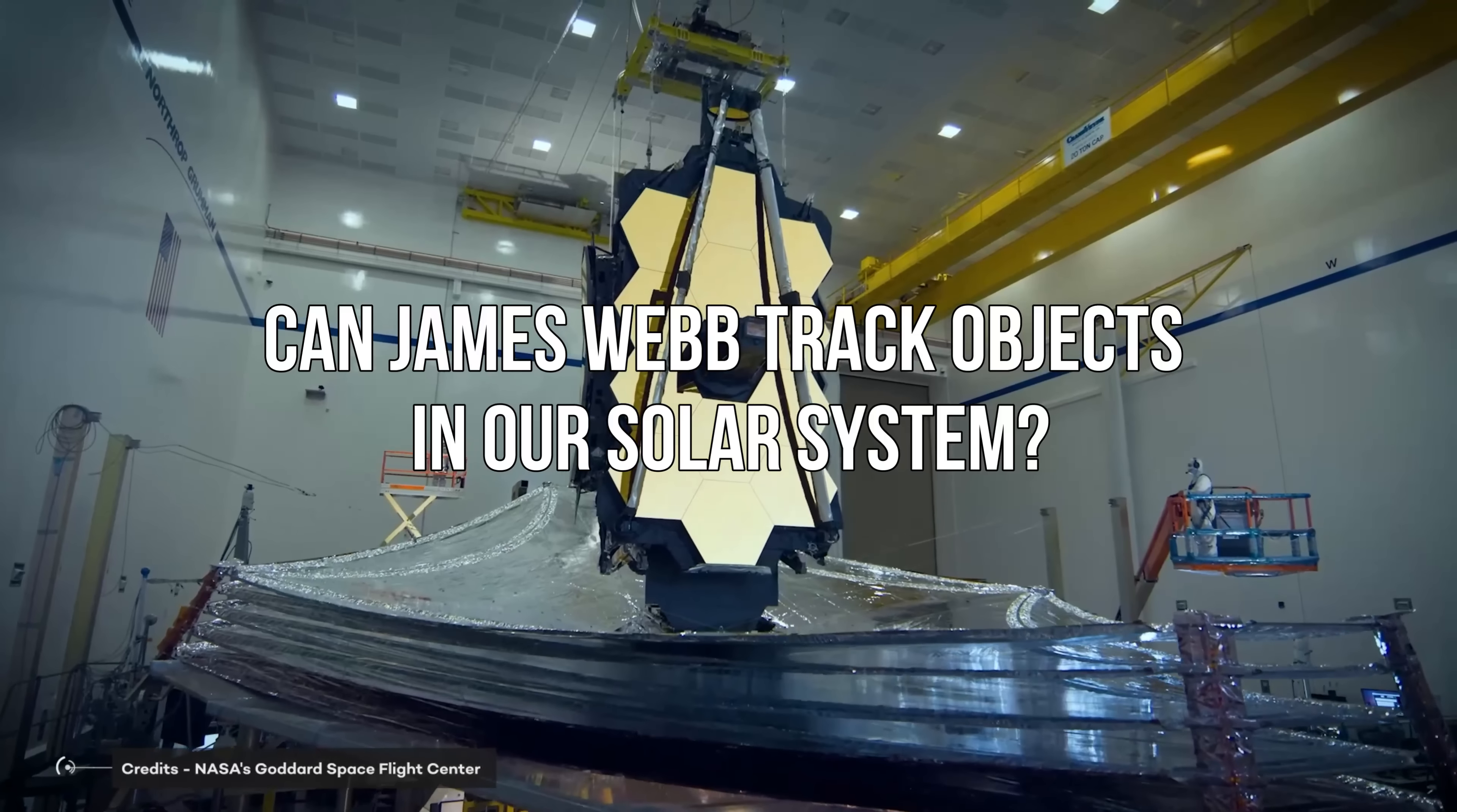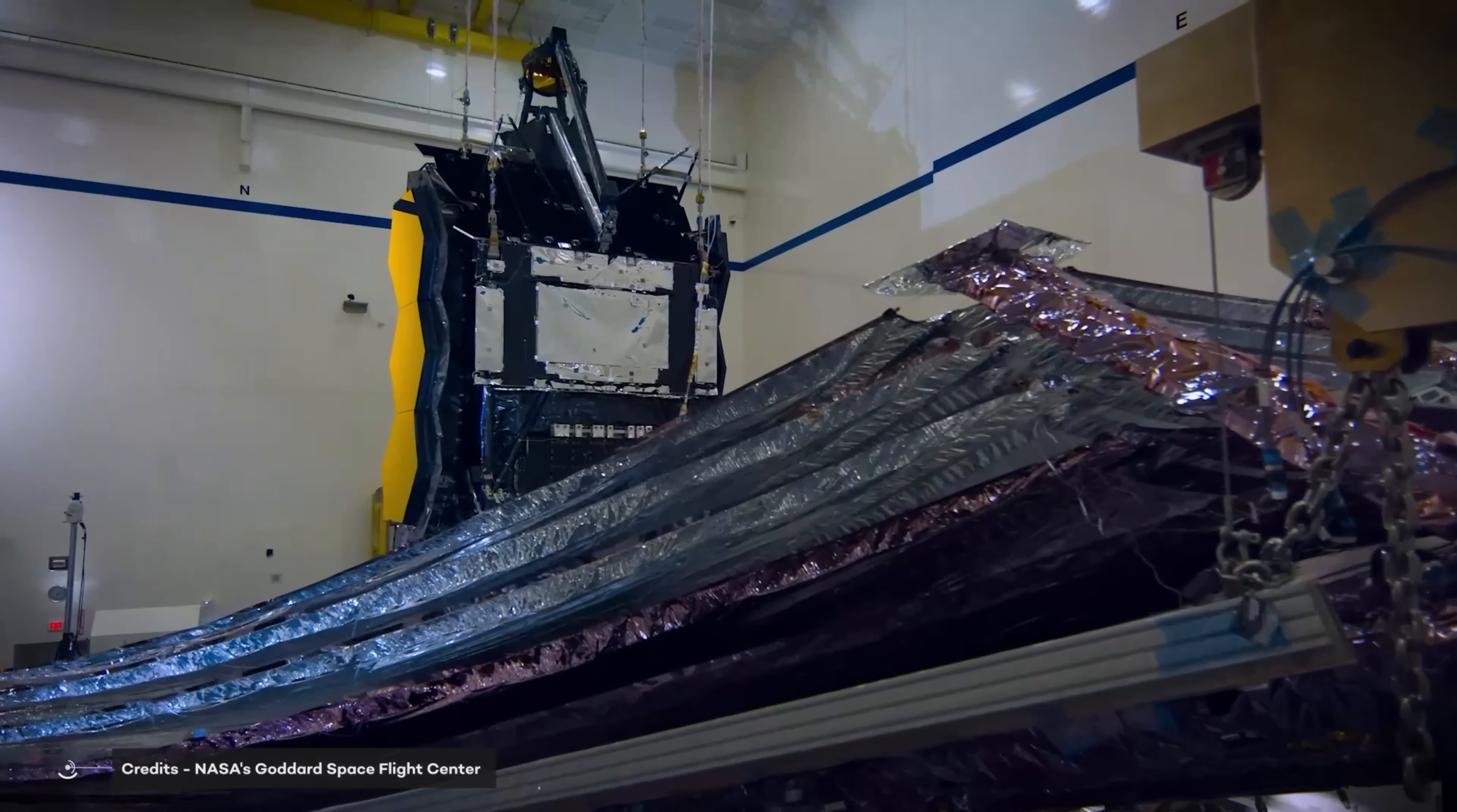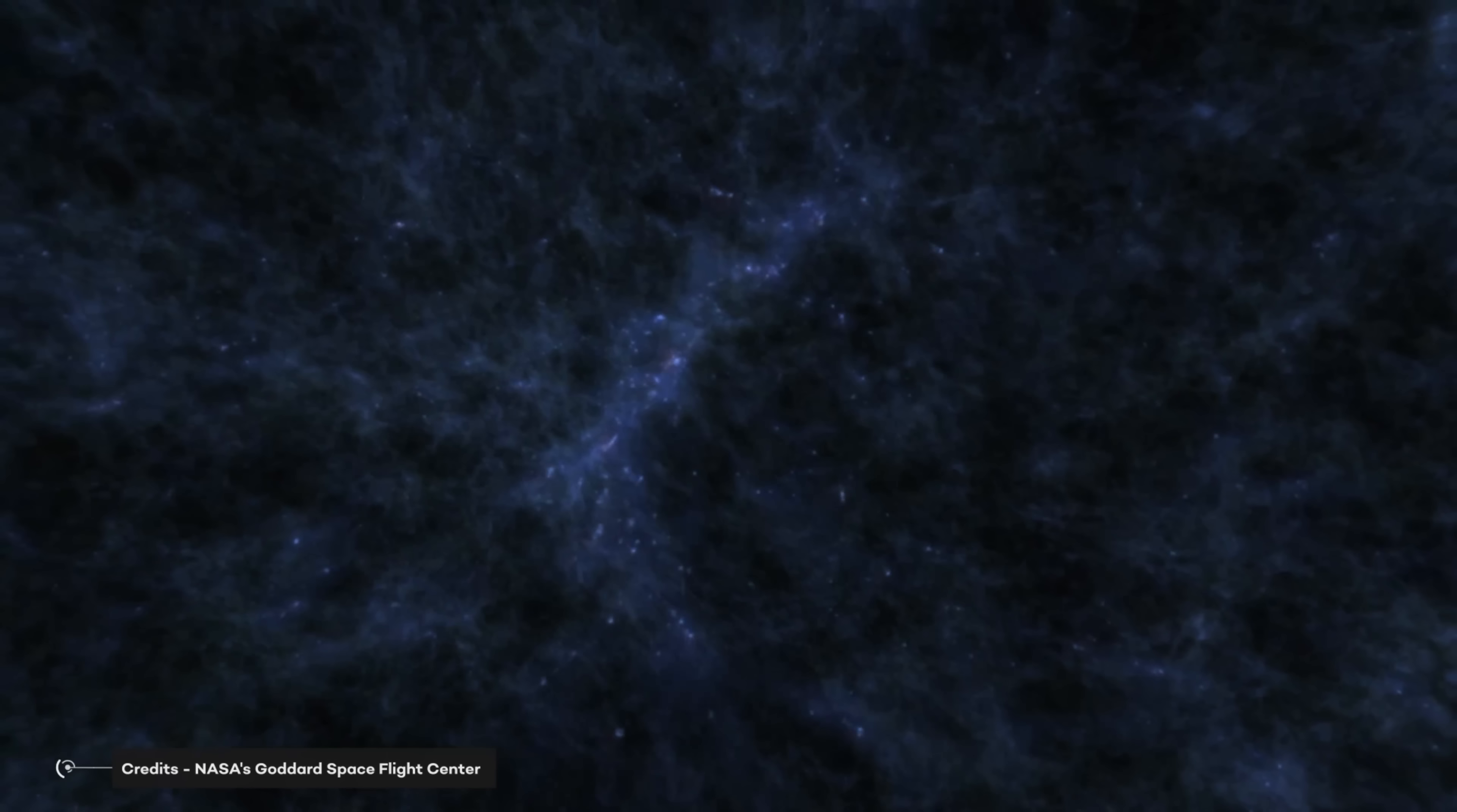Can James Webb Track Objects In Our Solar System? The James Webb Space Telescope has captured stunning images of our solar system, including nebulae, galaxies, and even the deepest views of the universe.